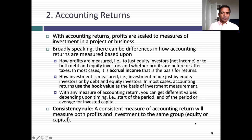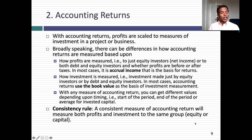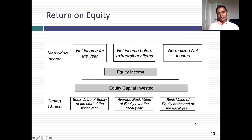There's a simple consistency rule to keep in mind when computing accounting returns: if your numerator measures returns to one group of investors, your denominator has to represent that same group. If you have net income in the numerator — that's income to equity investors — your denominator must be capital invested by equity investors only. You cannot mismatch. Broadly speaking, there are two measures of accounting returns: return on equity and return on overall invested capital.